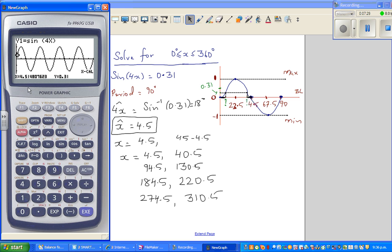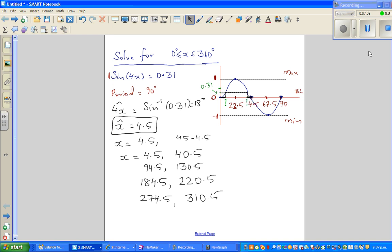The next answer is 40.48, which is 40.5, that's fine. The next is 94.5. The next answer is 130.5. I've rounded it. This is 184.5, this is 220.5, this is 274.5, and the last answer is 310.5. See you in the next video.